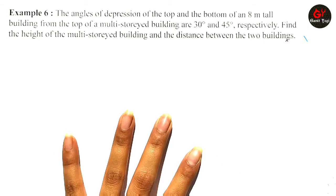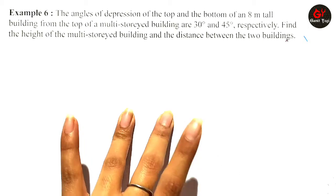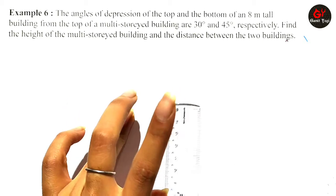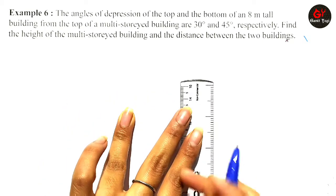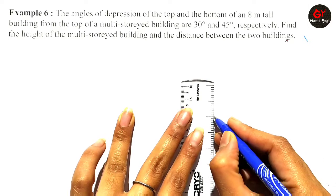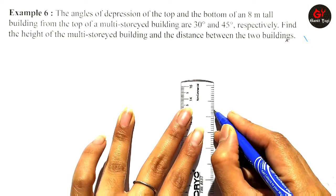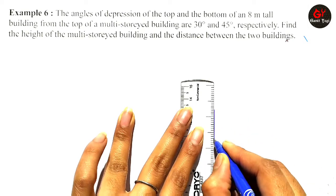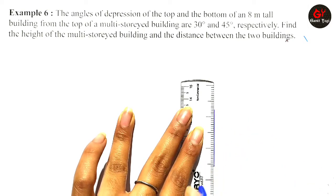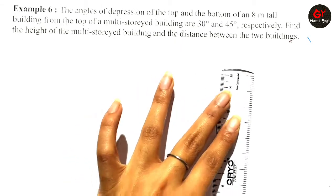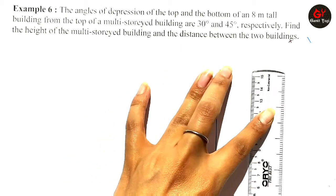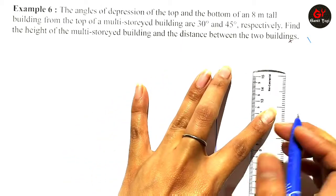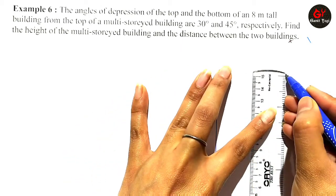So here we are talking about two buildings — one is our 8-meter tall building, which I will draw first, and the second building is the multi-storied building. We have to draw both of them.